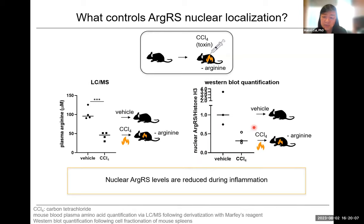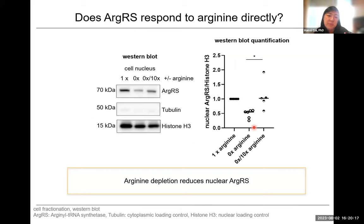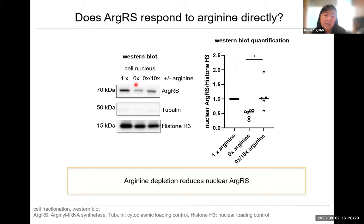To make sure this is really due to the reduction in arginine and not cytokines, we repeated the experiment in tissue culture where we can deplete arginine in the medium by using arginine-free medium. If we have zero arginine, we also get a reduction in nuclear ArgRS. This is reversible — if we add arginine back in, ArgRS levels recover and you can see the increase. The quantification shows this drop and full recovery.